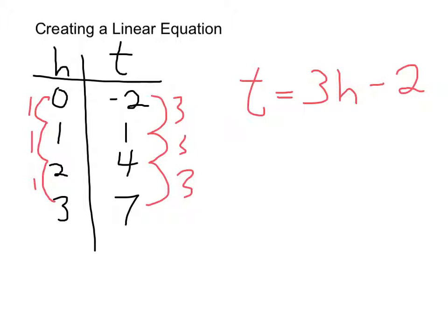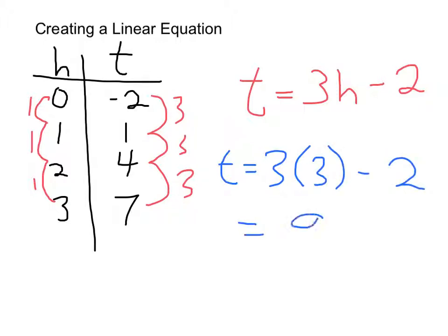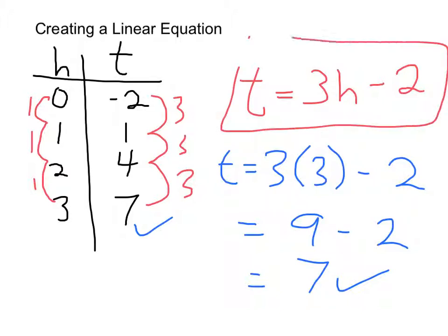Let's test it with 3 and 7. We're saying T is 3 times 3 minus 2. 3 times 3 is 9, minus 2. And 9 minus 2 is 7. That worked out. So my equation here perfectly describes this relationship.